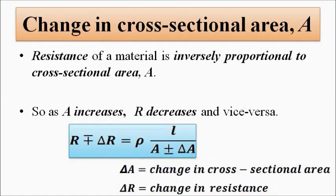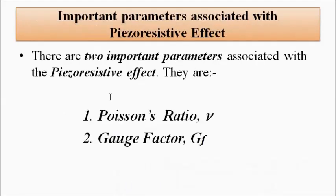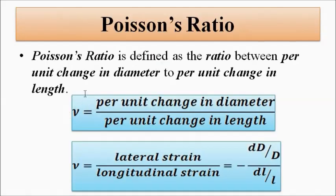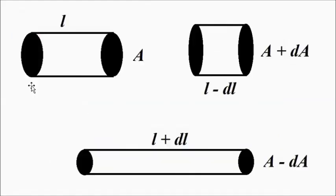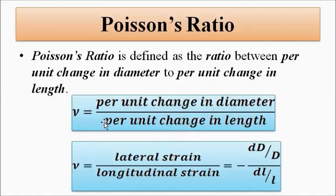Two factors also play a very important role in the design of transducers: Poisson's ratio and gauge factor. Poisson's ratio is defined as the per-unit change in diameter of the wire divided by the per-unit change in length — that is, the lateral strain divided by the longitudinal strain. Considering a circular cross-section, this gives us the Poisson's ratio.